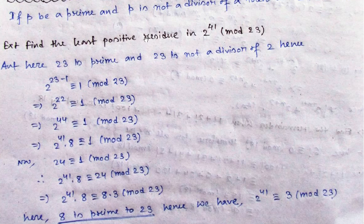That is an integer a. So, let us find out the least positive residue of 2 to the power 41 under modulo 23. Now, 23 is a prime number and 23 does not divide 2.